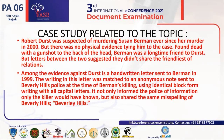In a case study related to this topic: Robert Durst was suspected of murdering Susan Berman ever since her murder in 2000, but there was no physical evidence tying him to the case. Found dead with a gunshot to the back of the head, Berman was a long-time friend of Durst, but letters between the two suggested they didn't share the friendliest of relationships. Among the evidence against Durst is a handwritten letter sent to Berman in 1999. The writing in that letter was matched to an anonymous note sent to the Beverly Hills police at the time of Berman's killing, using identical block writing with all capital letters. The note not only informed police of information only the killer would have known, but shared the same misspelling of Beverly Hills.